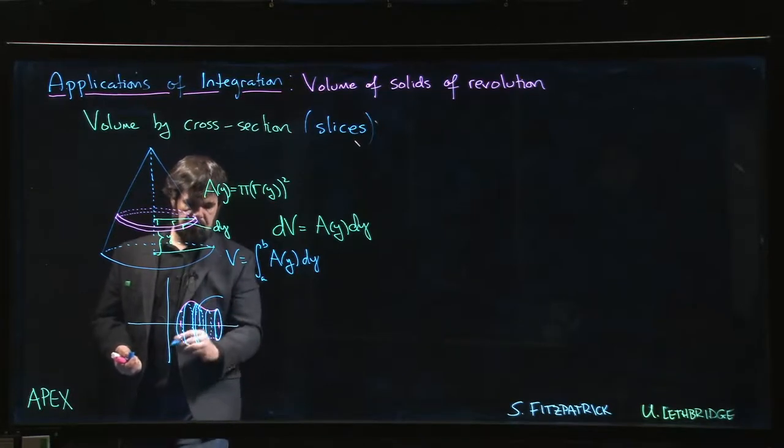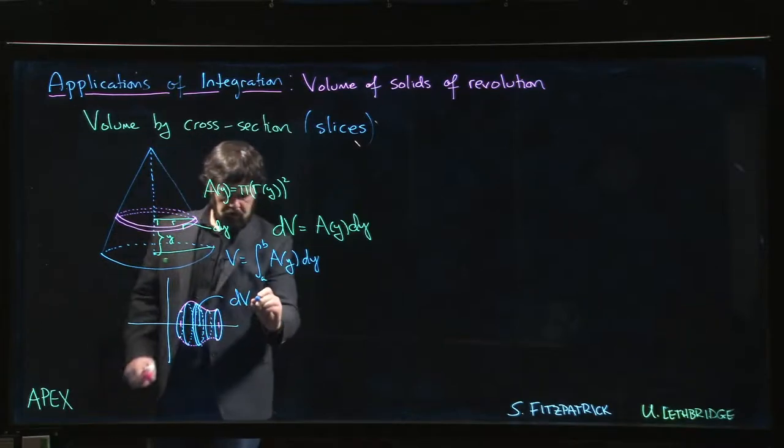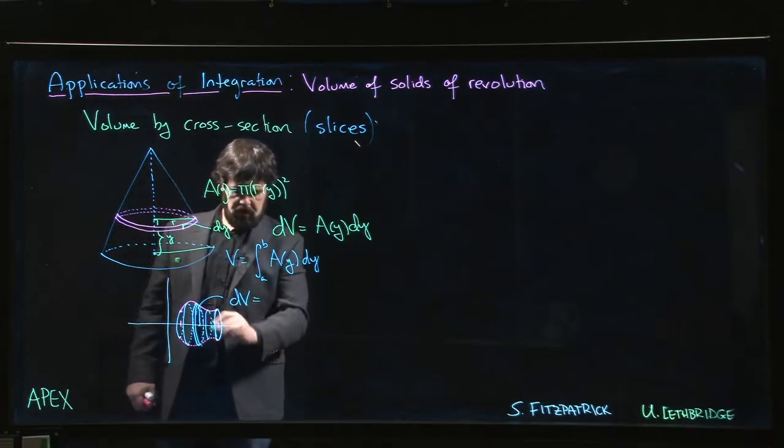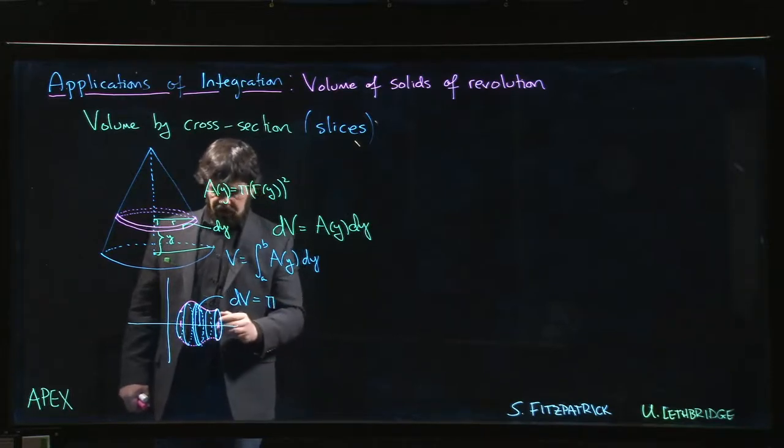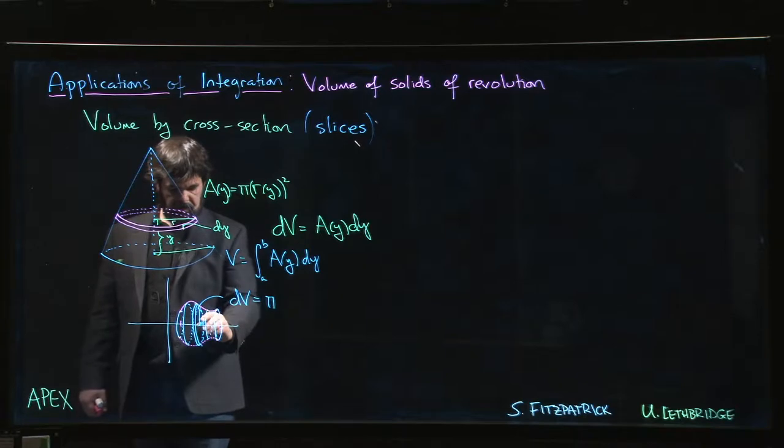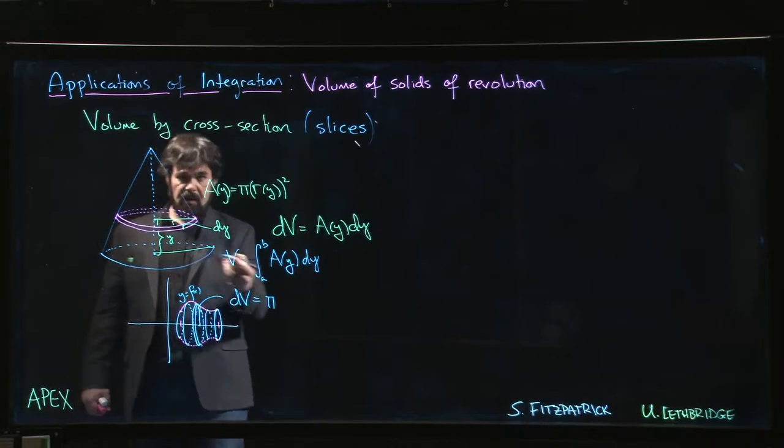For this particular slice, your dV is going to have an area, so the area is going to be πr². What is the radius? The radius is just the distance from the x-axis to this curve. If this curve is y = f(x), then the radius is just f(x). So it's π[f(x)]² times dx.